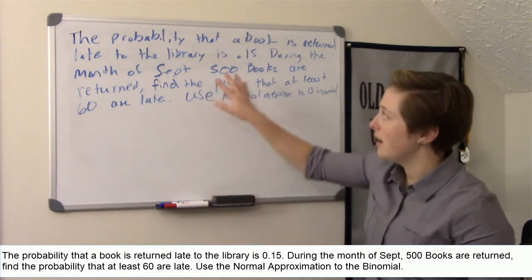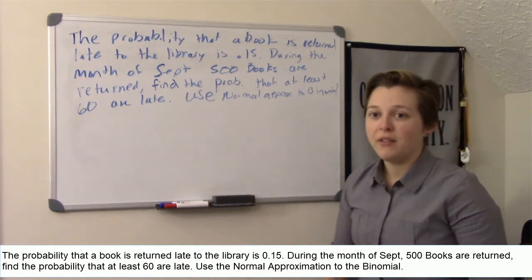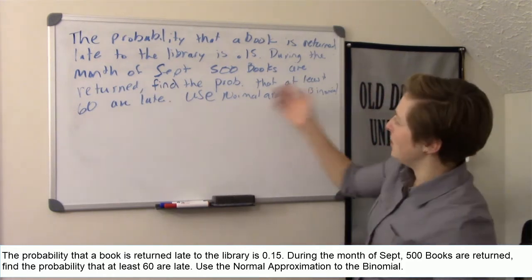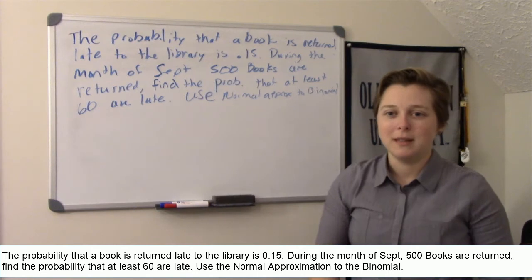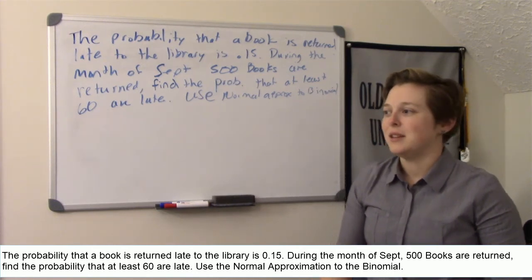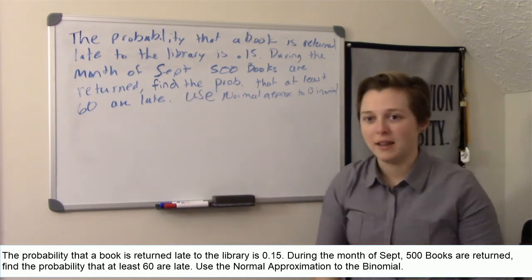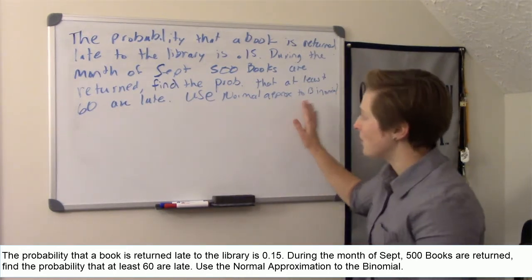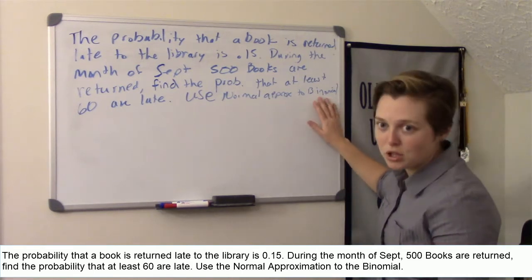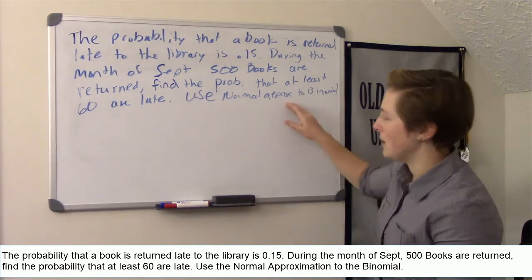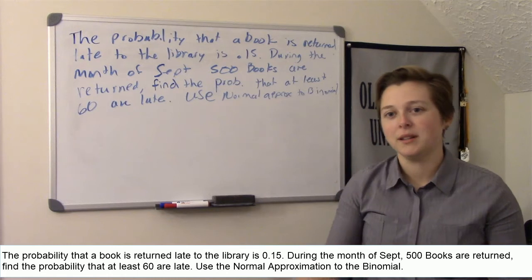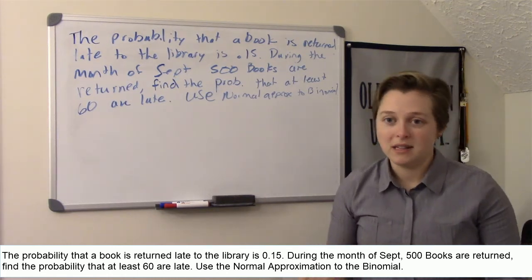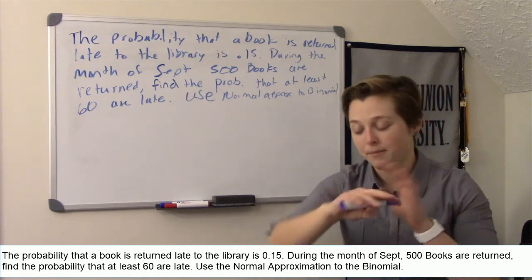So you see these large numbers. If you were to do 500 choose 60 in your calculator, you'd have problems. And since we want it to be at least 60, we then would need 60 or more. So you need to, it would require too many calculations in order to be able to do on a test. So that's why we don't use the binomial distribution. Rather, we use the normal approximation, which is something that we can do on a test. So solving this using the binomial would be near to impossible on an exam without a computer.